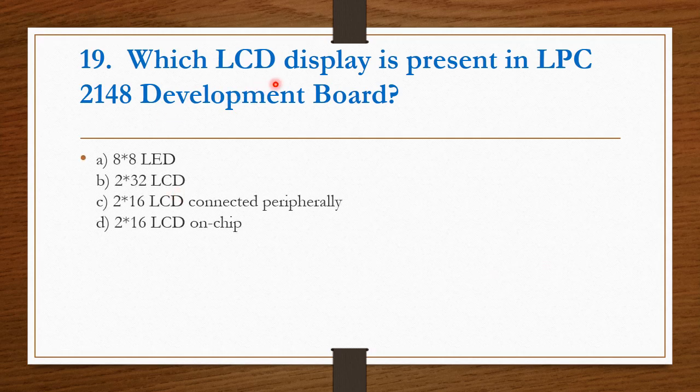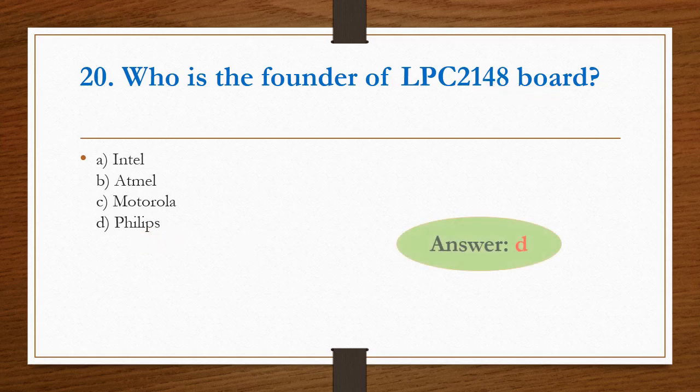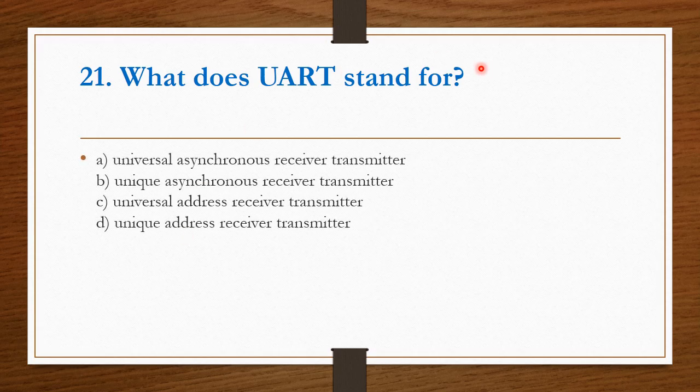Which LCD display is present in the LPC 2148 development board? 2 into 16 LCD on chip. Option D is the right answer. Who is the founder of LPC 2148 board? Philips. Option D is the right answer. What does UART stand for? U stands for universal, A stands for asynchronous, R stands for receiver, and T stands for transmitter. Therefore, option A is the right answer. Universal asynchronous receiver transmitter.